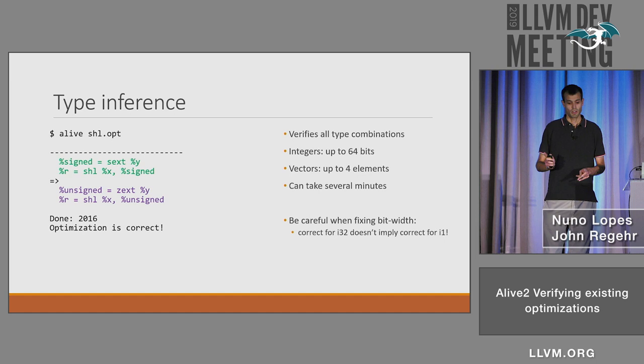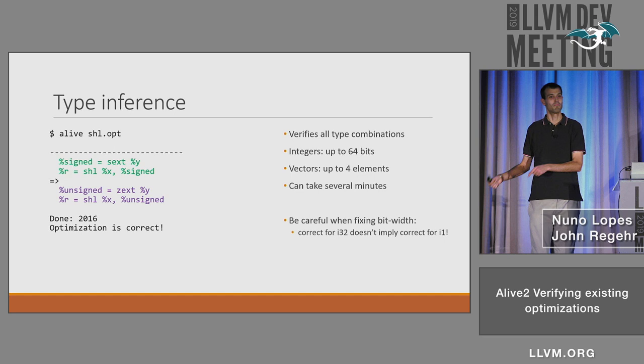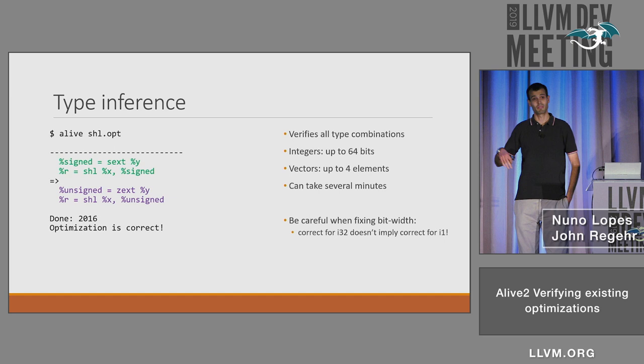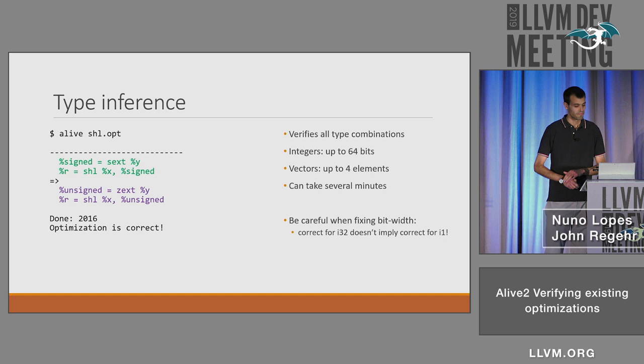A word of caution: since Alive was a bit slow, people got used to fixing the bit width in the original version, and it's not always correct because we can have additions with I1, and that's an edge case. Just because it's correct for eight bits doesn't necessarily mean it's correct for one bit. So I would encourage you to try to leave the types out.